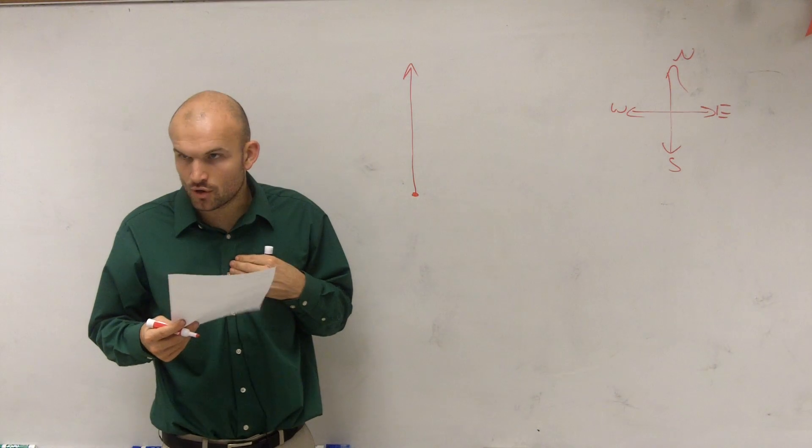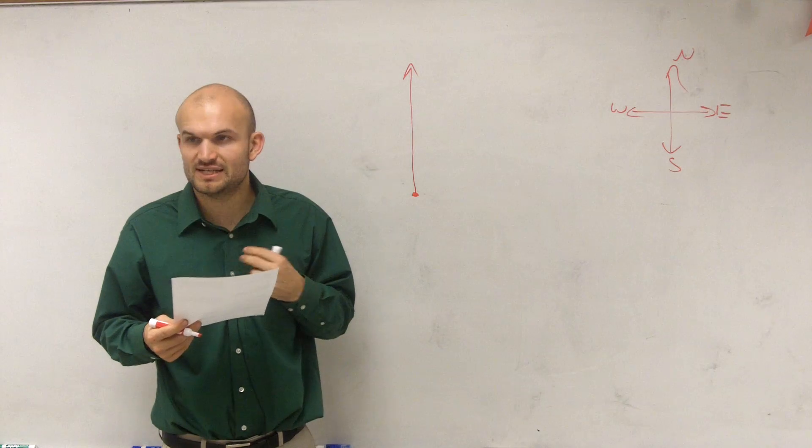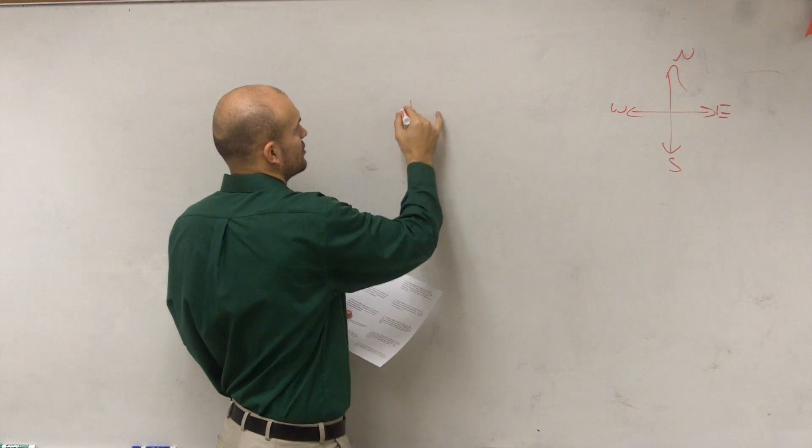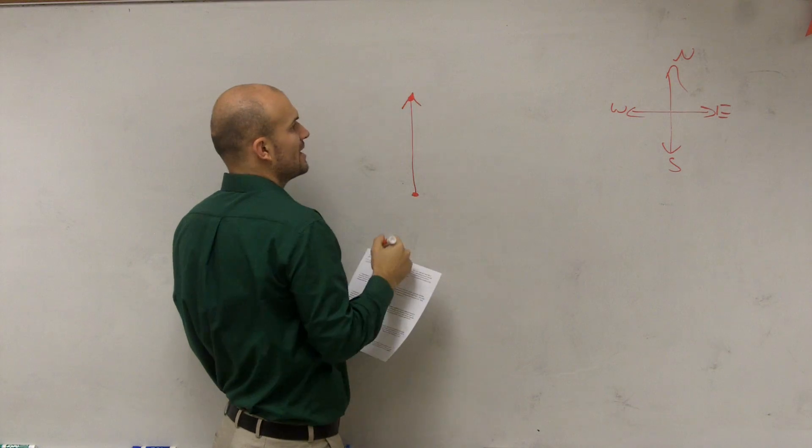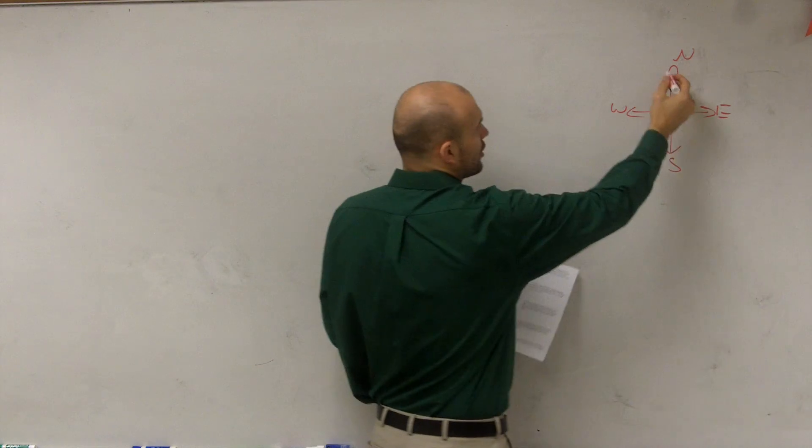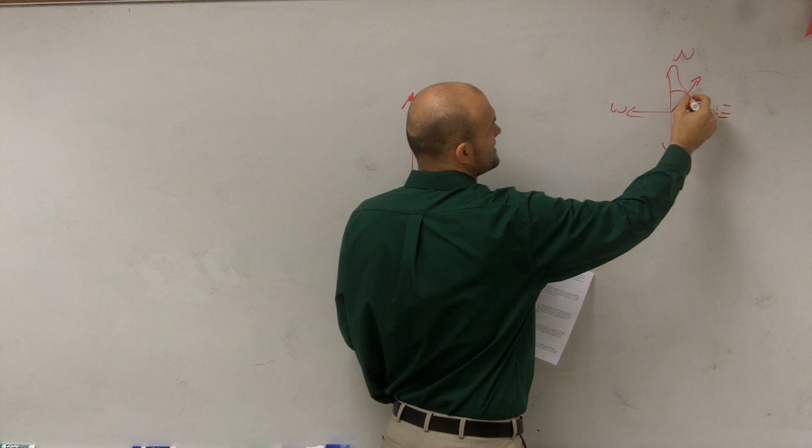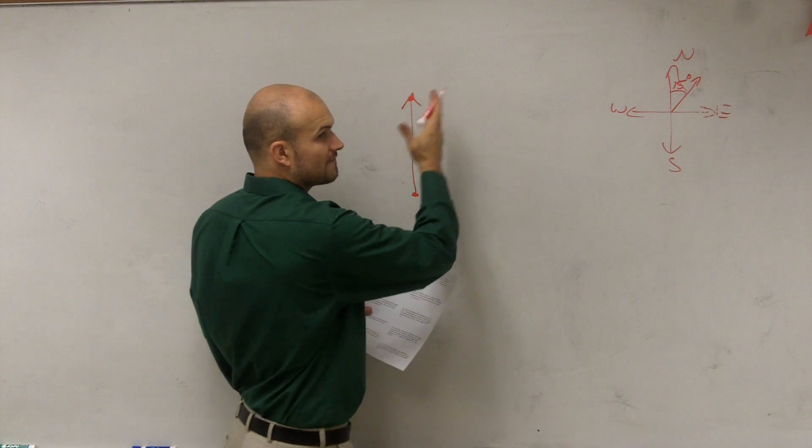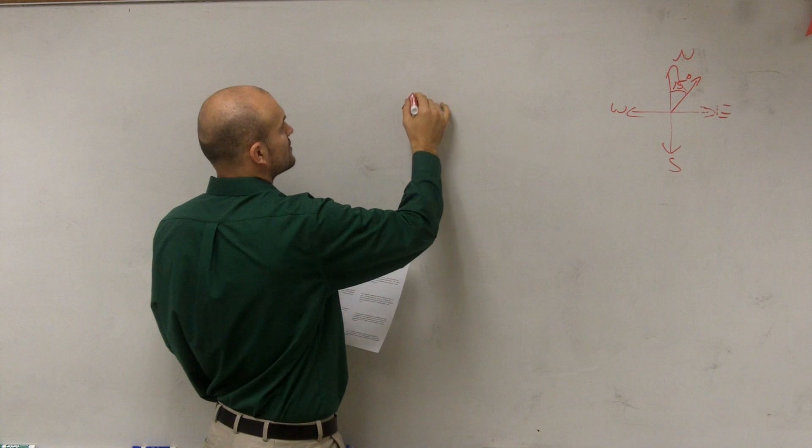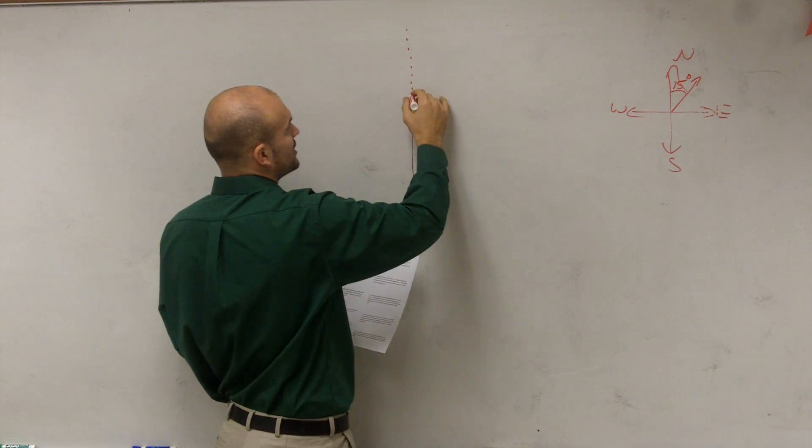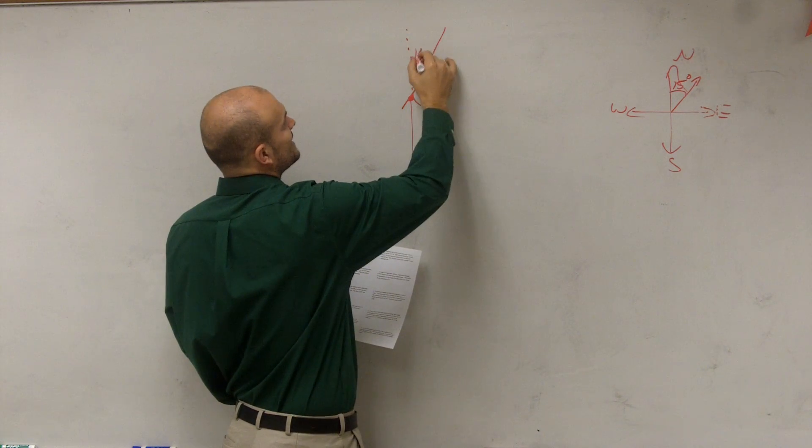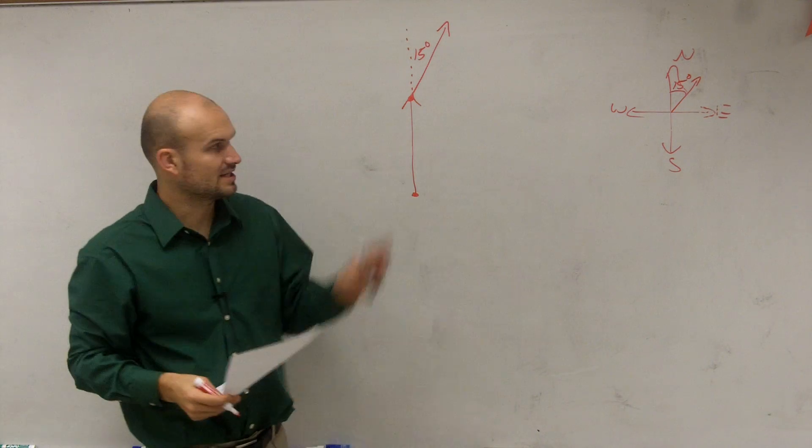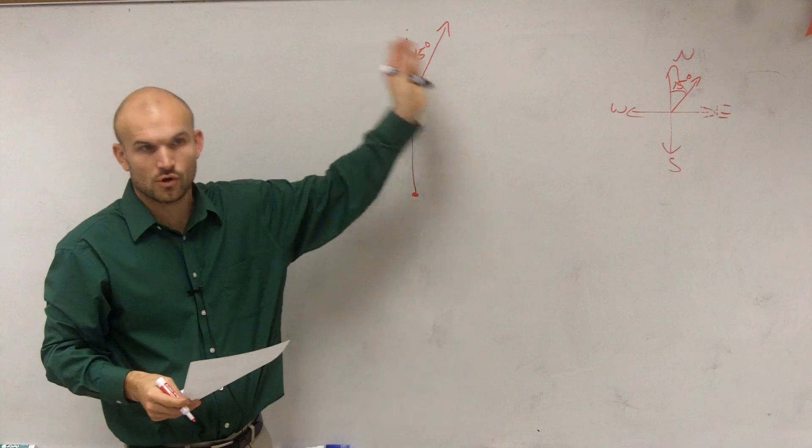Then it changes course to north 15 degrees east. Where would north 15 degrees east be? Because let's actually shorten this a little bit. So if it's heading this way, then it goes north 15 degrees east. So if I was to continue in the north direction, 15 degrees east would be this. Does everybody see that? Because east is to the right and north is straight up.